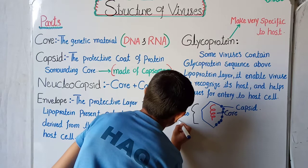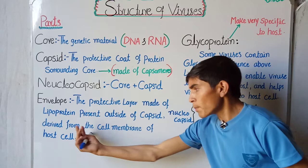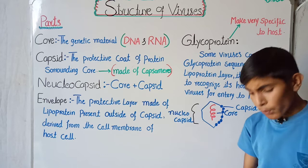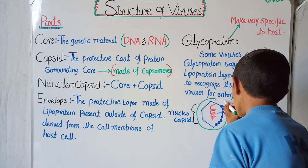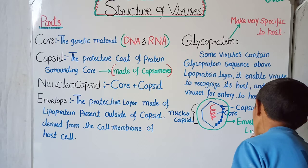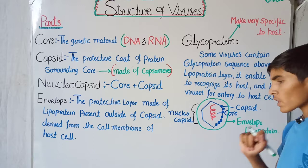The fourth part is the envelope. Envelope is the protective layer made of lipoprotein present outside of the capsid. It is a protective cover present just outside of the capsid and surrounds the capsid, made of lipoprotein.